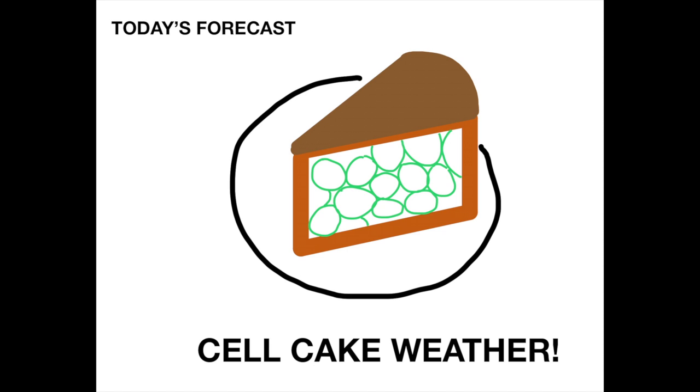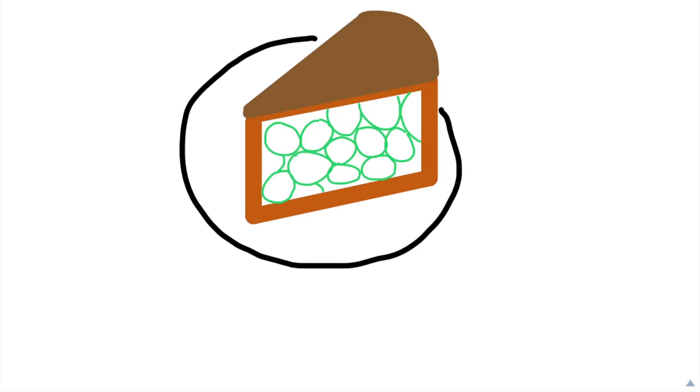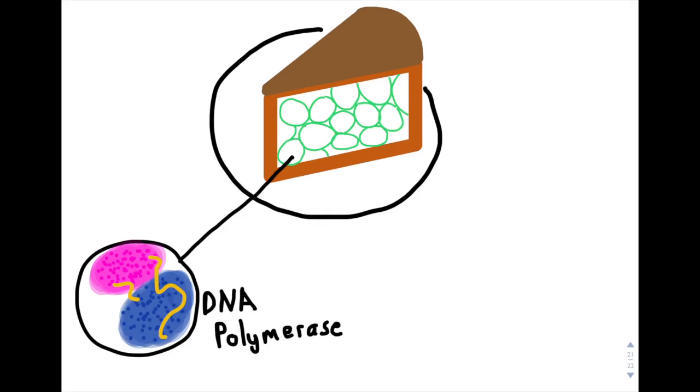It was that time of year when Buddy and his friend would bake cell cakes. The cell cakes required many ingredients that they would find in various locations all throughout their town. The first ingredient was DNA polymerase. Another ingredient was centrioles.